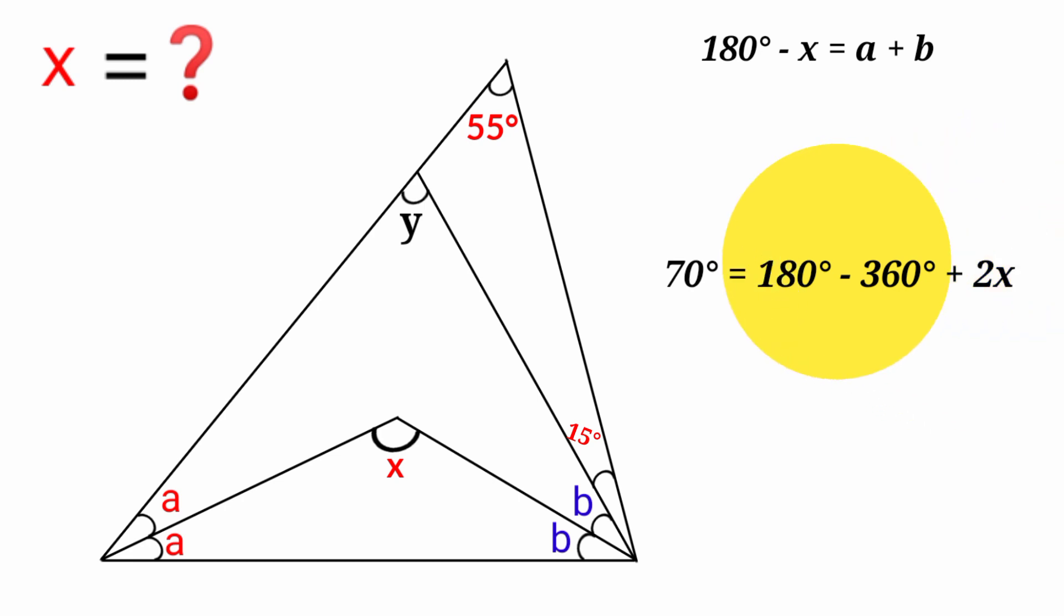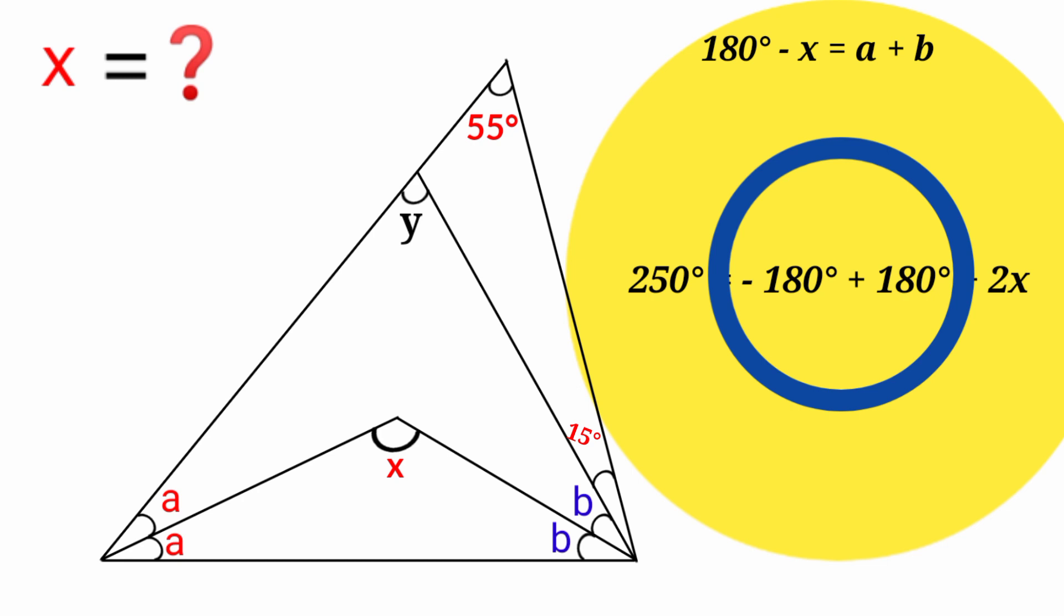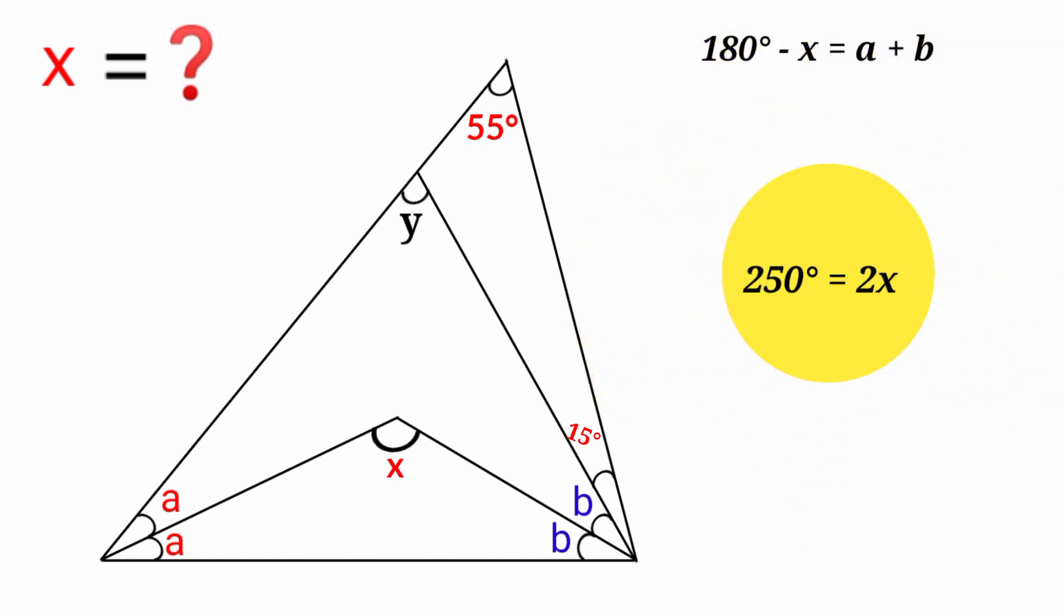180 degrees minus 360 degrees is minus 180. Now we're going to collect the like terms by adding 180 degrees to both sides here. 70 degrees plus 180 degrees is 250 degrees, and here minus 180 plus 180 is zero. So 250 degrees equals 2x.